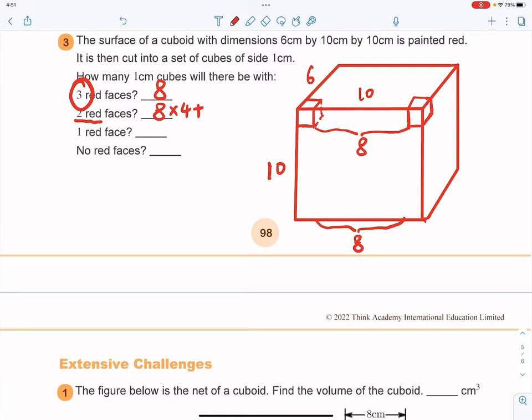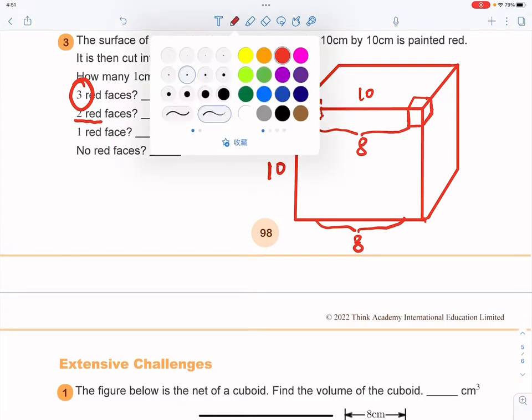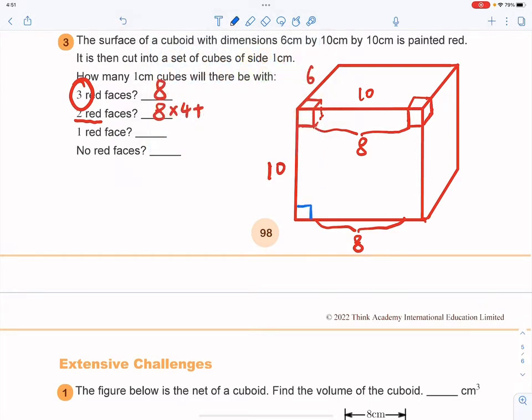And plus, that'll be the same in terms of the vertical direction. So 10, take away the two on the top and bottom. That'll be 8 as well. And again, repeat that by 4 times. So this is for vertical side. So that will be 8 times 4 again.